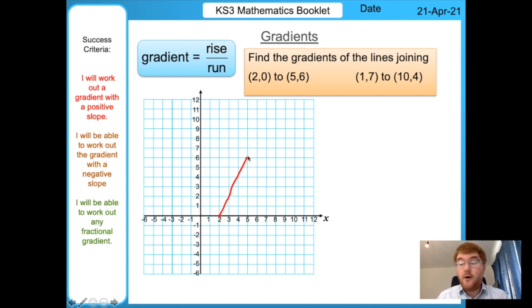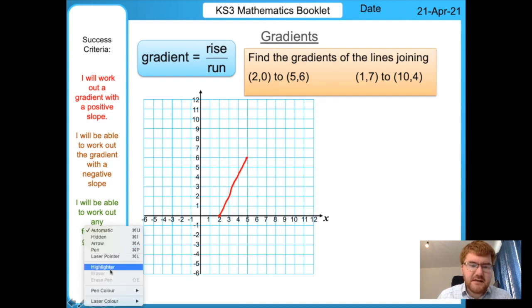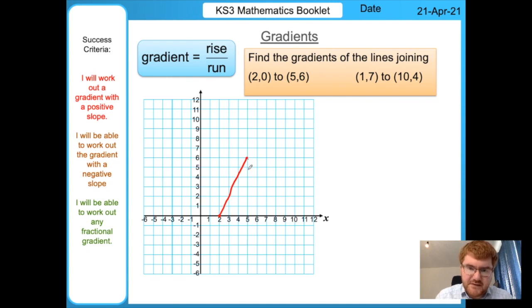We're going to start with our line here, points (2,0) and (5,6), and we're going to use a geometric way of working it out first. The first thing we need to do is make a right angle triangle from the two endpoints. I'm going to draw a vertical line downwards.